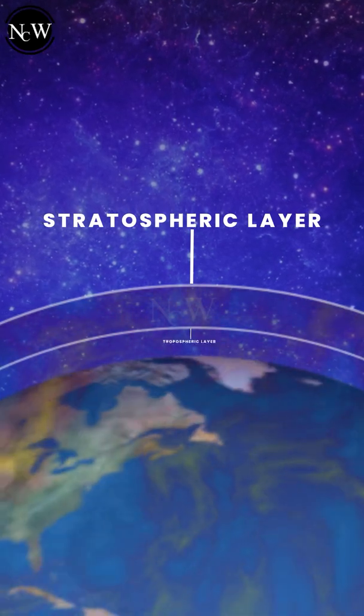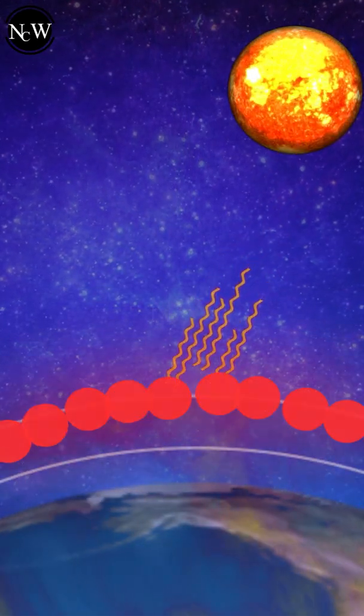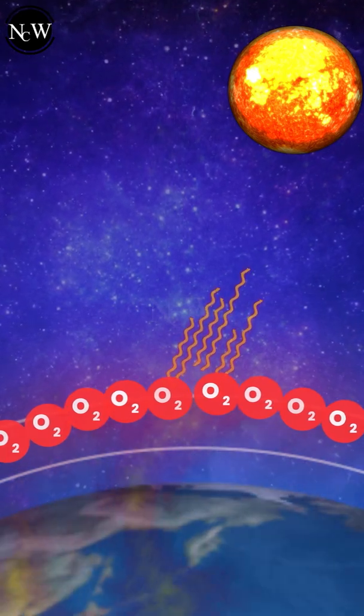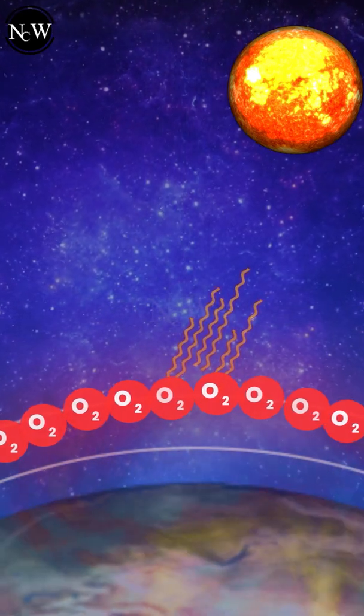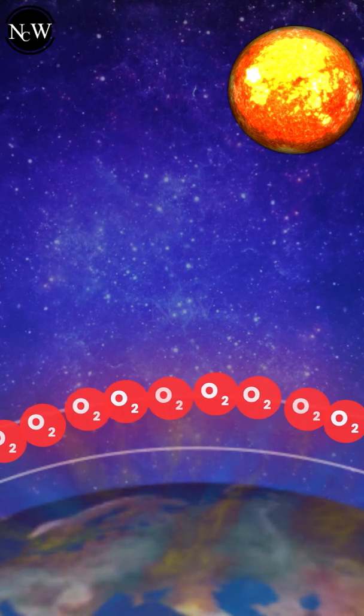Stratospheric ozone is formed naturally when highly energetic UV light particles interact with oxygen molecules, and with time it has formed a layer which absorbs the UV radiation, hence protecting us from it.